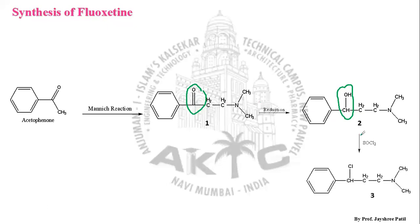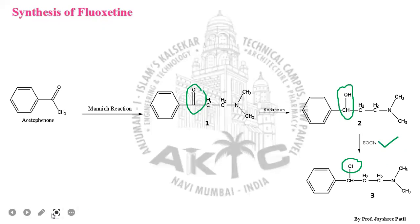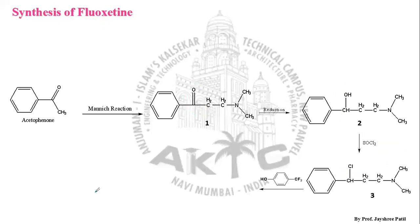The OH group in Structure 2 is then acted upon by a chlorinating agent. Chlorination can be done using PCl₃, PCl₅, or SOCl₂. Specifically, SOCl₂ is used here, replacing the OH group with Cl to give the chlorinated compound, Structure 3.